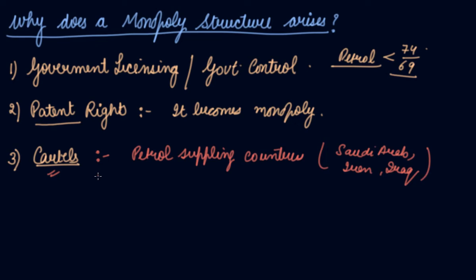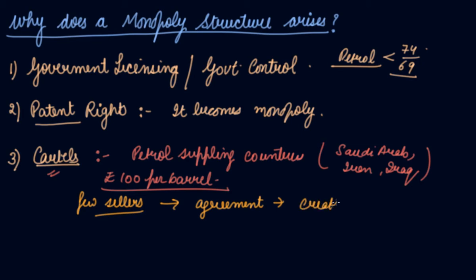They won't sell their petrol below a hundred rupees per barrel. By doing this, even though there are few sellers in the market, by coming into an agreement, they have created a monopoly where all these countries will be selling petrol at a hundred rupees per barrel. These are the cartels they make, and this gives rise to monopoly in the market.